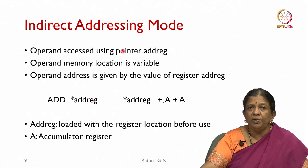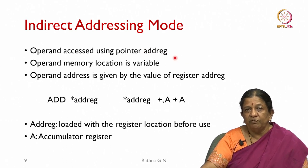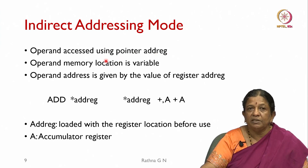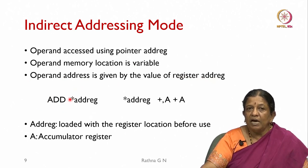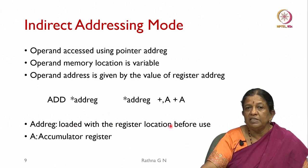In indirect addressing mode, the operand is accessed using a pointer — 'ADD *AR'. Since all our operations are continuous summations (sigma from 0 to N-1 of multiply-add), we need a pointer to access one element after another. The operand's memory location is variable; its address is given by the value in the address register. The register must be loaded with the memory location before use.